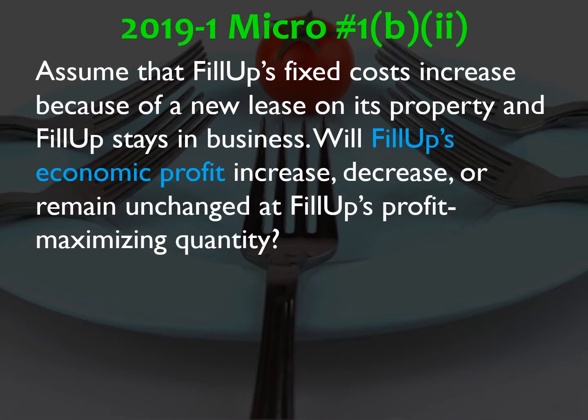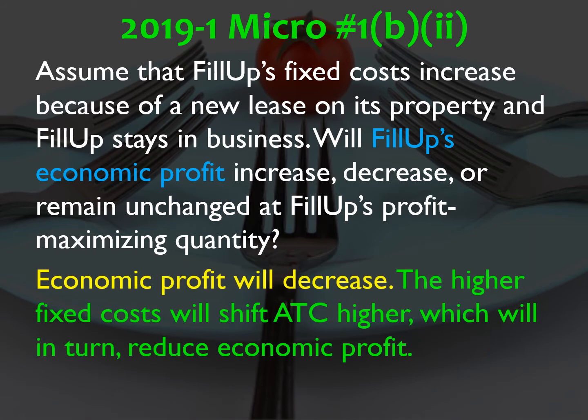Will Phillip's economic profit increase, decrease, or remain unchanged due to the increased fixed cost? Economic profit will decrease. The higher fixed costs will cause ATC to shift upward, which in turn will reduce economic profit. Even though it doesn't change the profit maximizing quantity, the overall costs are higher due to the higher fixed costs, which means ATC is also higher. At the same quantity with the same price, ATC is higher, which means there's less profit.